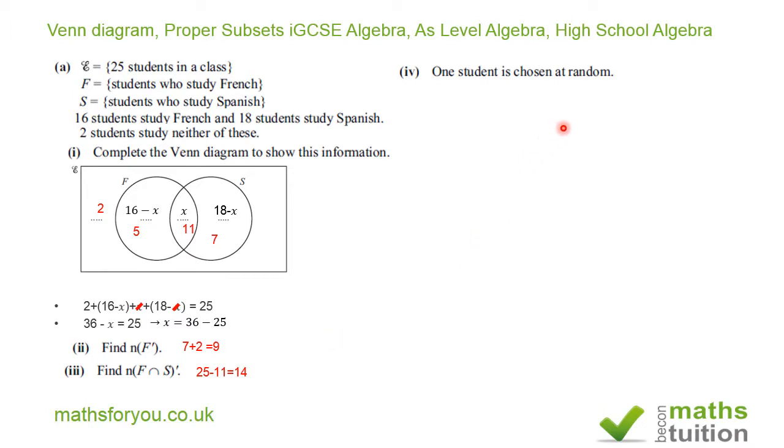Section 4 says, one student is chosen at random, find the probability that this student studies both French and Spanish. Now, both French and Spanish should be F intersection S and that's 11 there. So probability to be 11 over 25. That's what we got there.